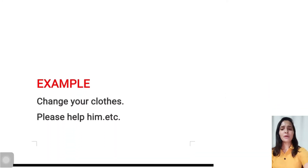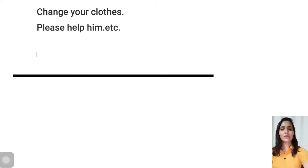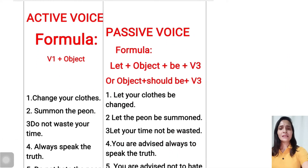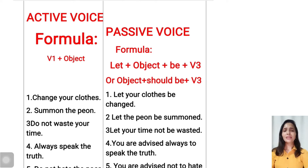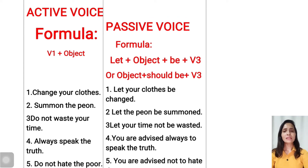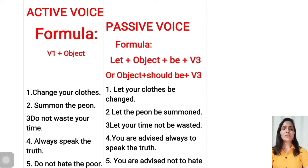Let's take some examples. 'Change your clothes' — this is a command. 'Please help him' — this is a request. These are examples of imperative sentences. Now let's understand how to change the active voice of an imperative sentence into passive voice. The formula of active voice is: Verb 1 + Object.